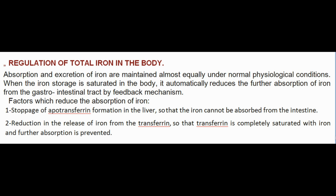Regulation of total iron in the body: absorption and excretion of iron are maintained almost equally under normal physiological conditions. When iron storage is saturated, the body automatically reduces further absorption from the gastrointestinal tract by a feedback mechanism. Factors which reduce absorption include: (1) stoppage of apotransferrin formation in the liver so that iron cannot be absorbed from the intestine; (2) reduction in the release of iron from transferrin so that transferrin is completely saturated and further absorption is prevented.